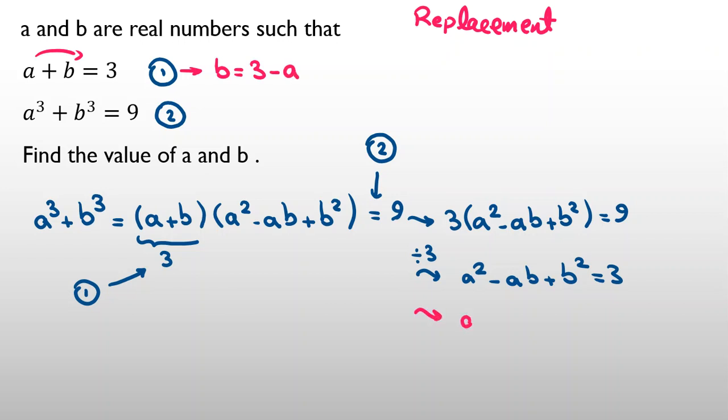And I replace it here: a squared minus a times (3 minus a) plus (3 minus a) squared equals 3. Now, as I want to use this, I should know that (x minus y) squared is x squared minus 2xy plus y squared.